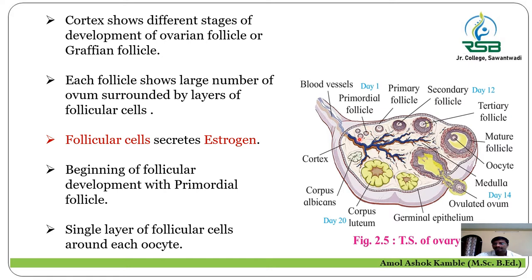The importance of these follicular cells is that they release the important hormone estrogen. These follicular cells secrete the estrogen hormone, which is an important characteristic feature. At the beginning, follicular development starts with the primordial follicle. Then the primordial follicle develops into the primary follicle. Day 1: primordial follicle. Day 12: secondary follicle. Day 14: the actual ovulation takes place.